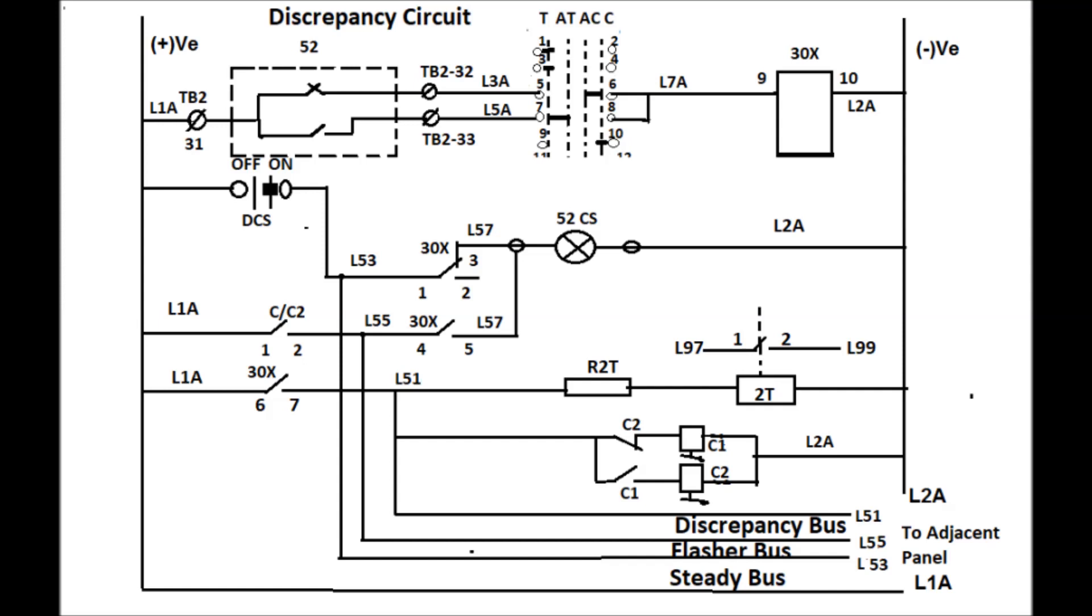One flasher relay located in the bus coupler or bus transfer panel. Actually, there exists only one flasher relay in the entire 132 kV or 220 kV systems. Discrepancy relay in each panel, if any discrepancy happens with the position of the control switch and the CB state, it will lead to operate the 30x of the panel.